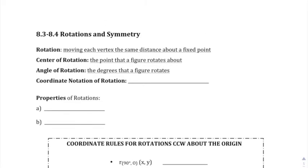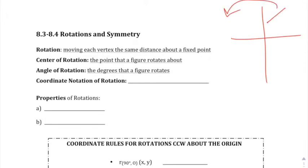Today we've got rotations, and we're going to talk about different types of symmetry. First, vocab board: rotation — that's moving each vertex of a shape the same distance about a fixed point. You can take a line and rotate it. Usually we're going to do that counterclockwise around a center of rotation, which is the point that you're rotating a figure around or about.